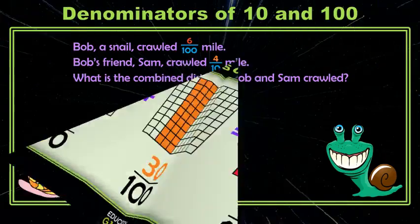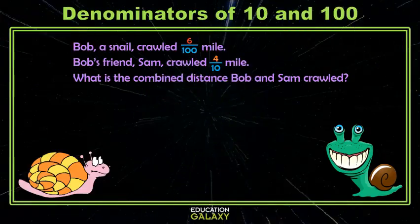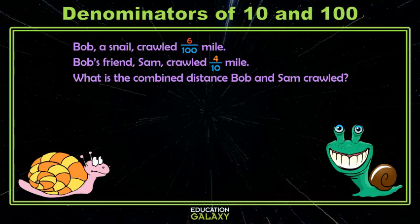Let's try an example. Here, Bob the snail crawled six one hundredths mile and Bob's friend Sam crawled four tenths mile. Now we want to know the combined distance, a total. To find this total, this combined distance, we need to add our two fractions.